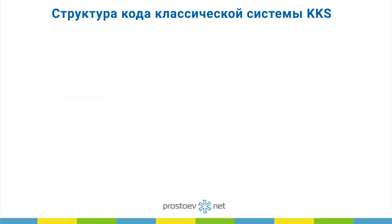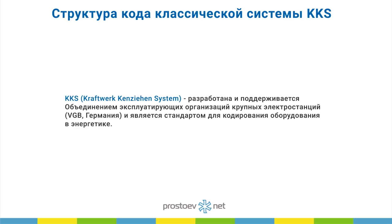Есть целая система ККС — система кодирования оборудования с точки зрения его нахождения в объектах генерации. Этот ККС придумала компания Siemens для описания логики работы своих контроллеров. Поэтому эта система — не шаблон, а система правил, она структурирована. Это типовые объекты генерации, которые позволяют унифицировать информацию по оборудованию: насосы питательной воды, турбины — они уже имеют некое место в технологическом процессе. Мы ККС не используем, потому что он поддерживает жёсткую структуру и привязан к типовым объектам.